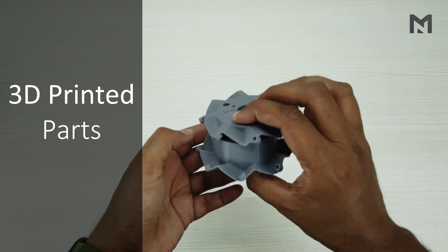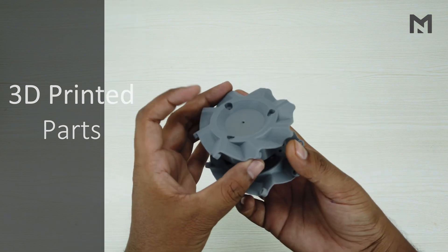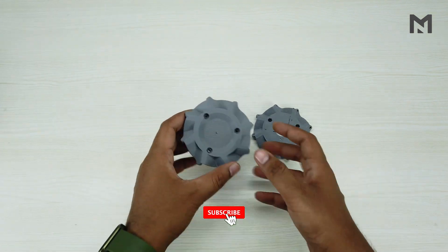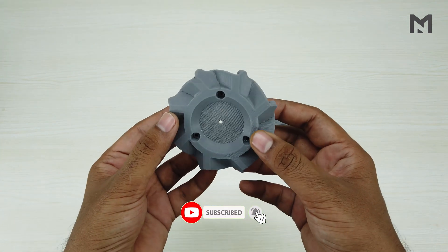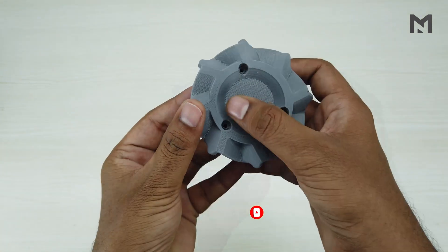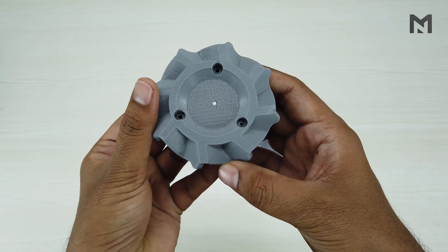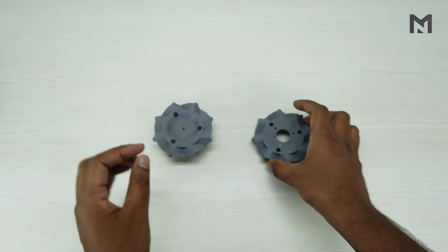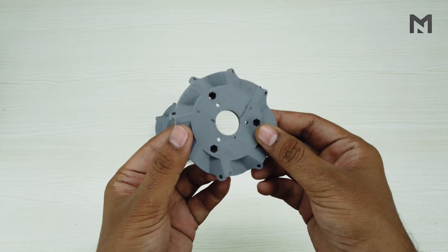I have 3D printed all the files. These files are printed at 0.2mm layer height and 30% infill. Let's start with its top part. This top part is printed very smooth and this center circle is a bit rough because we have used support in this, and we have not used support anywhere in the bottom part.